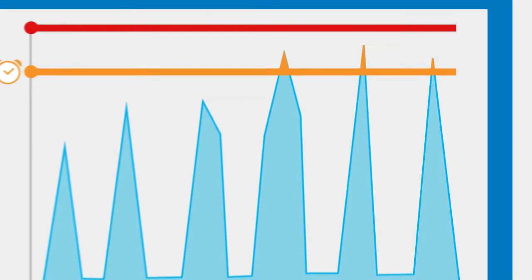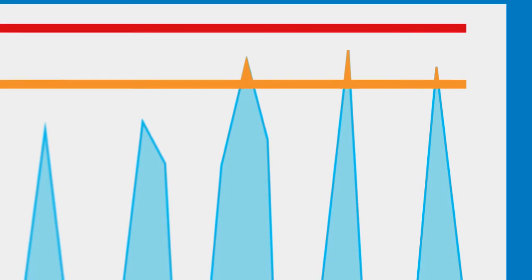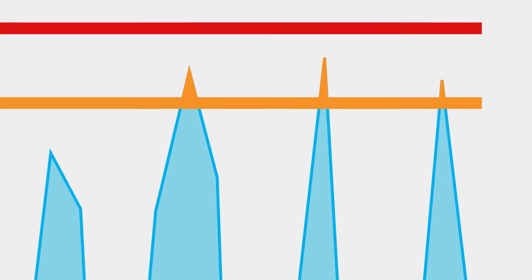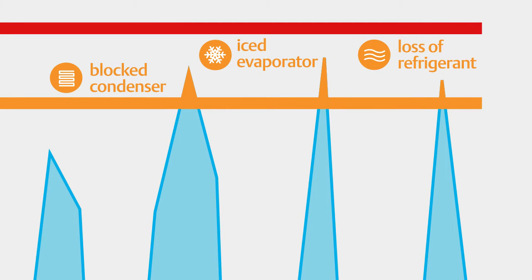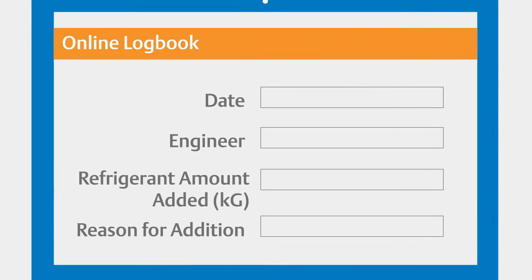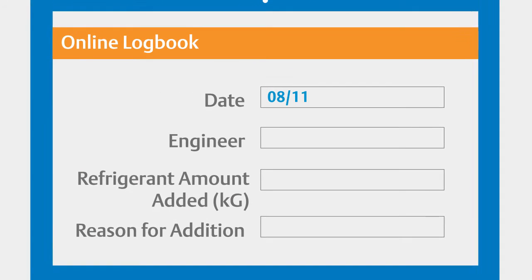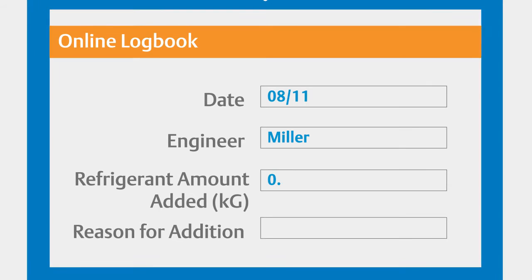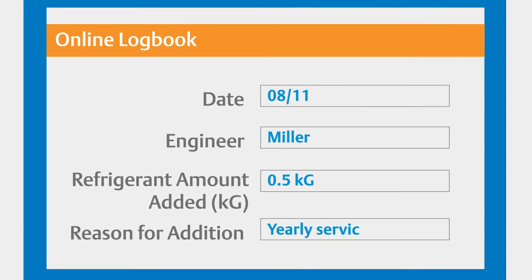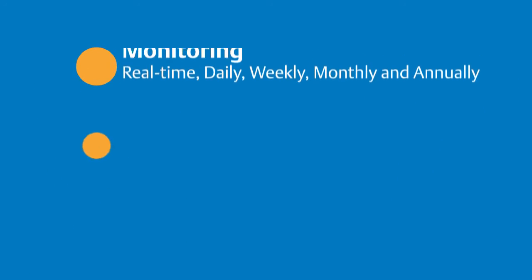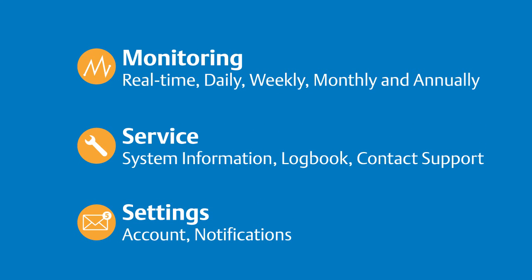Increase in power consumption can be caused by a number of things. These include a blocked condenser, an iced evaporator, or loss of refrigerant, among others. With ZX Cloud, you can easily record maintenance activities according to legislation through the online logbook. Learn more as we conduct a quick tour through the ZX Cloud website.